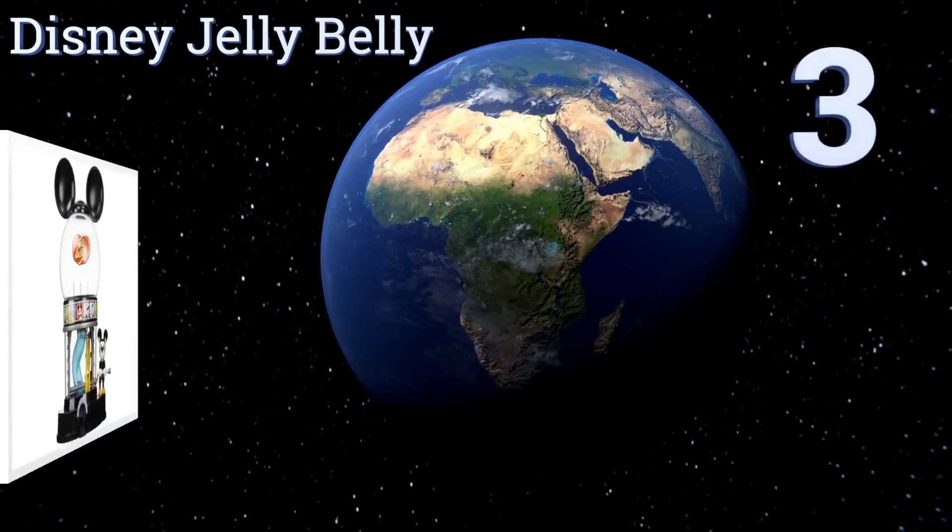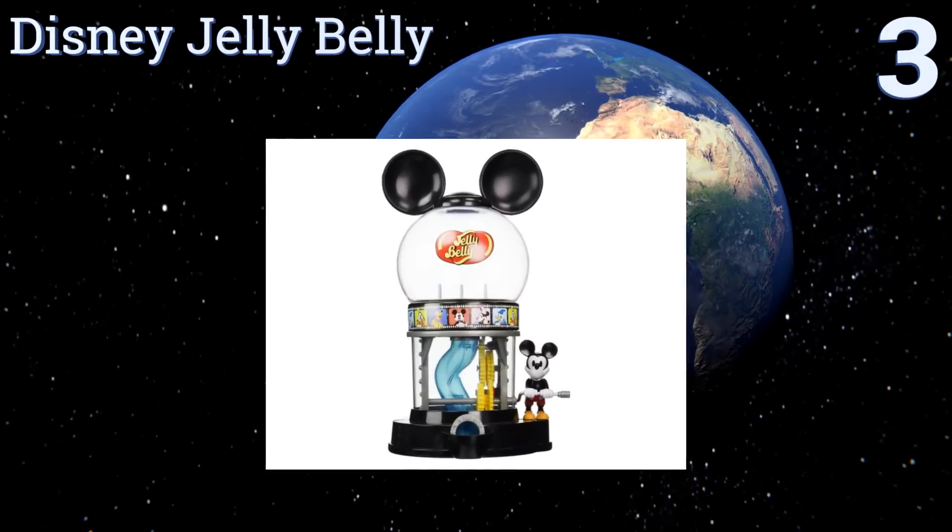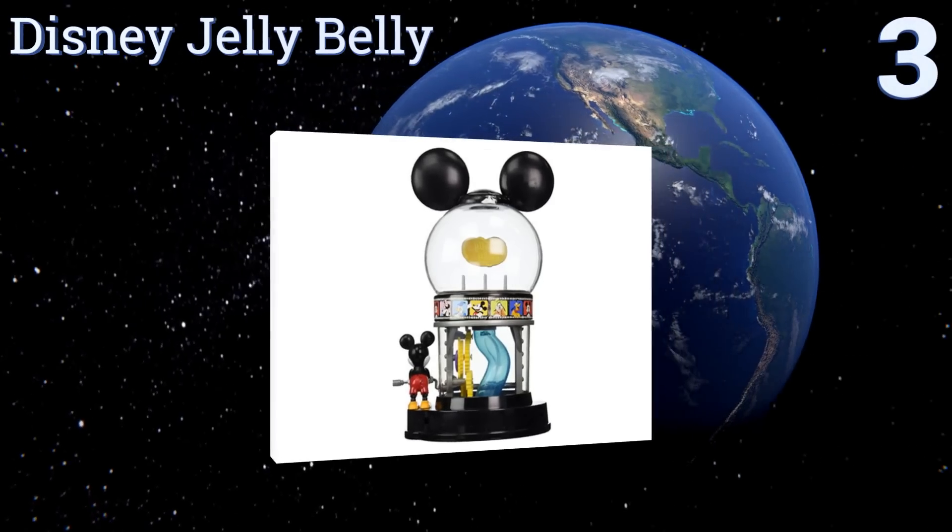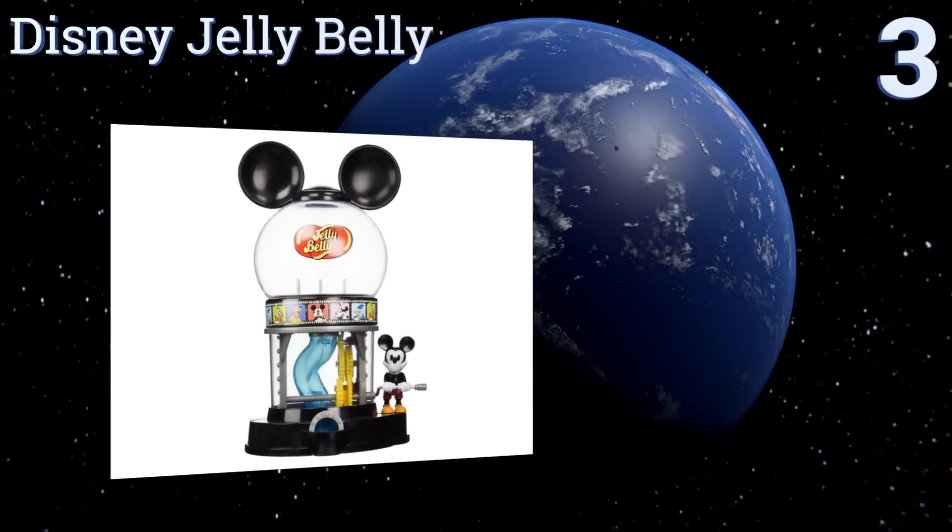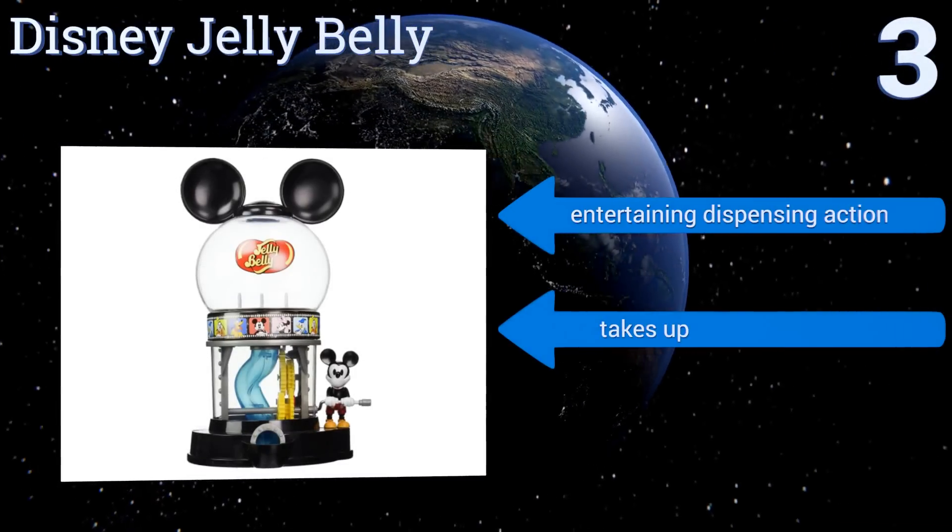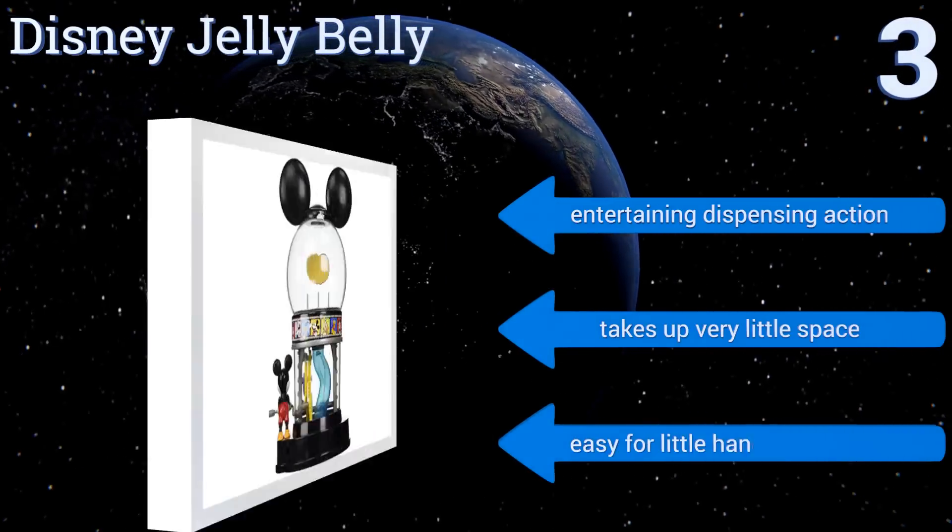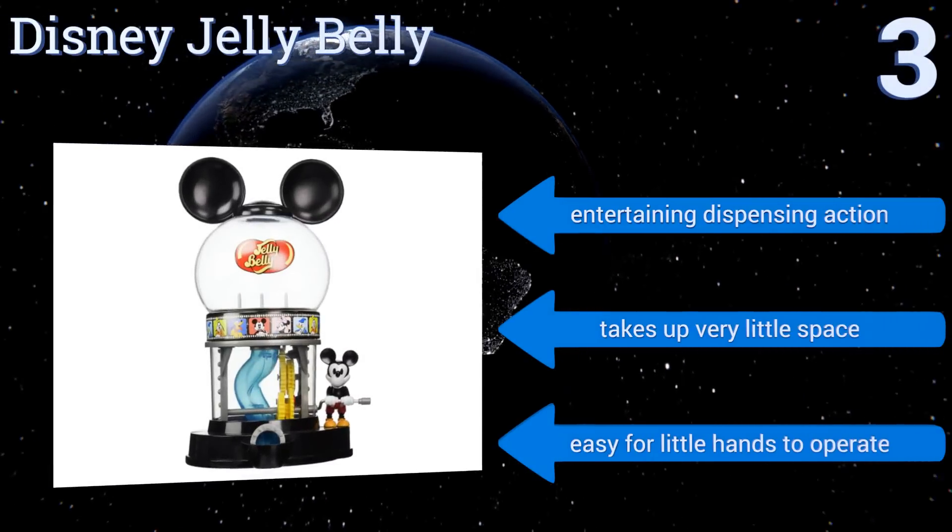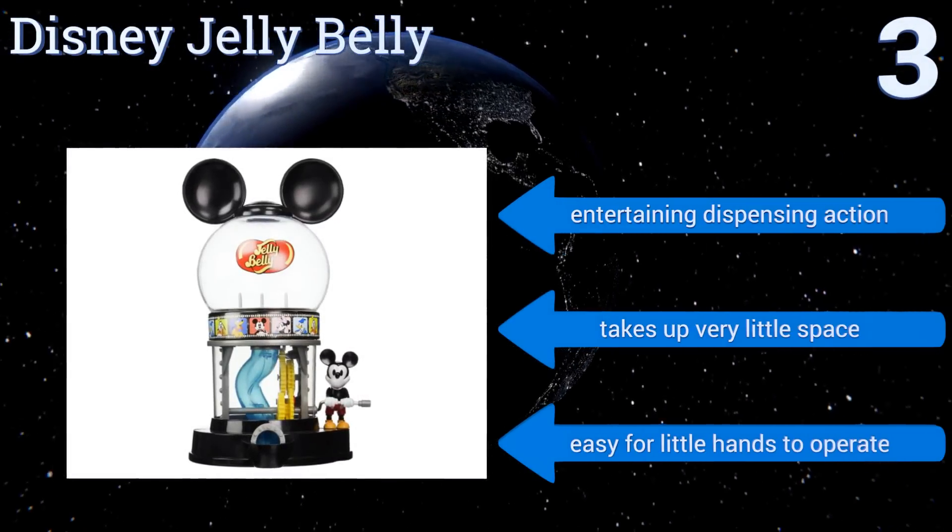Nearing the top of our list at number 3, Mickey Mouse fans of all ages will delight in the Disney Jelly Belly featuring his famous ears on top of the candy container. It has a 23 ounce capacity and comes with a small bag of assorted flavors so you can make use of it right away. It offers an entertaining dispensing action and takes up very little space. It's easy for little hands to operate.